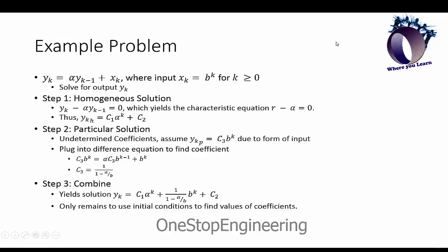I'll give you a brief example using the method of undetermined coefficients and how we would solve a constant coefficient difference equation. Here's our problem statement: we have that y_k equals alpha times y_{k-1} plus the input x_k, and I show here that the input is equal to b^k for k greater than zero, and we are looking for the output.